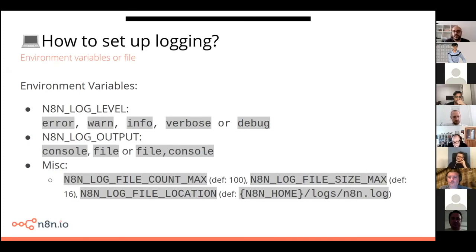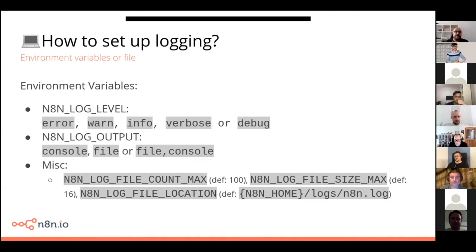There are a few consequences to adding more output options — adding more dependencies to n8n, making the Docker image or app size bigger, and naturally with external dependencies we have security concerns. So we decided for now to simply use file and console, which are super standard. If you need to use an external system, you can set up n8n to write information to a file, and there are applications that allow you to read that information and send it to an external system like Logly or Logstash.